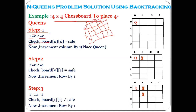In the initial state, is it possible to place the queen at row 0, column 0? Yes, because it is the initial state. There is no chance that any other queens will attack that queen, because there is only one queen available. So board[0][0] equals safe — it is safe to place the queen at this position. We have placed the queen here.